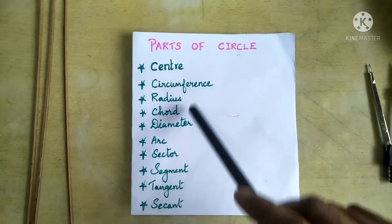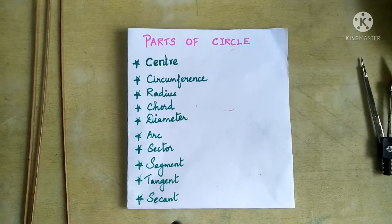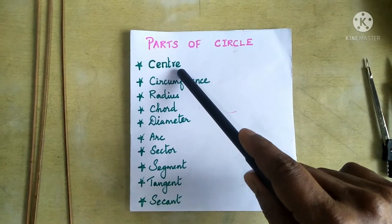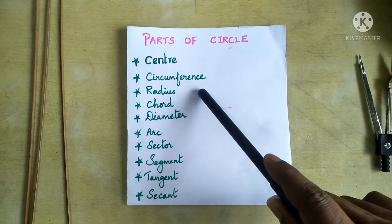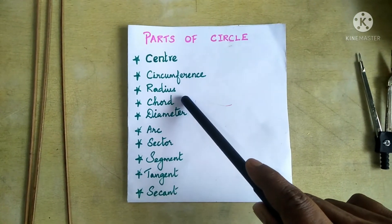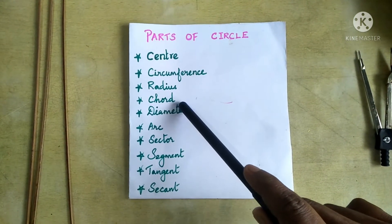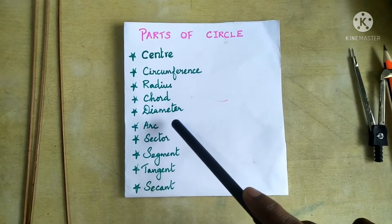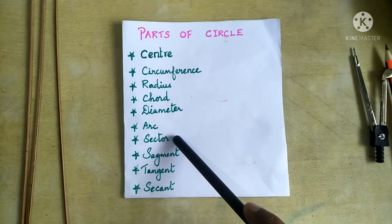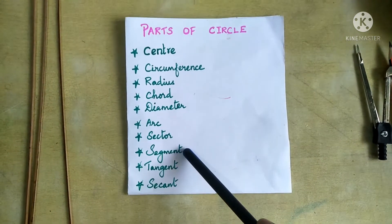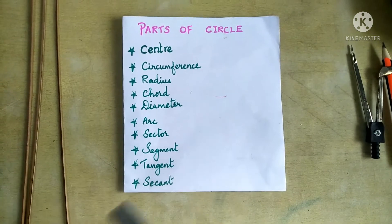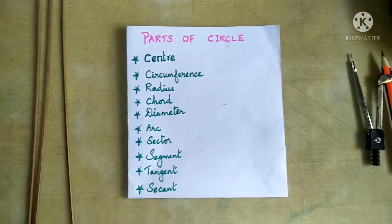These are the parts we are going to see: center of the circle, circumference, radius, chord, diameter, arc, sector, segment, tangent, and secant.